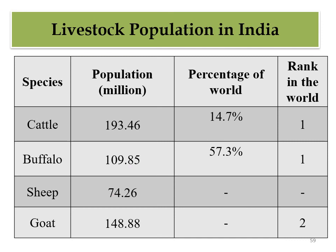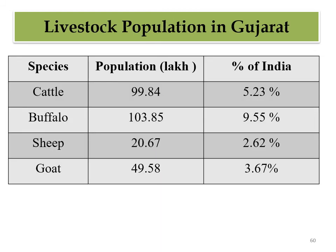Here is important data that can be asked in exams. Total cattle population in India is 193.46 million, buffalo 109.85 million, sheep 74.26 million, and goat 148.88 million. India has 14.7% of the world's cattle population and 57.3% of the world's buffalo population. India ranks first in cattle population, first in buffalo population, and second in goat population.